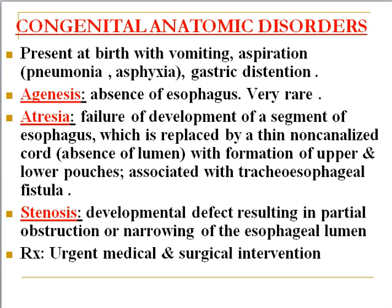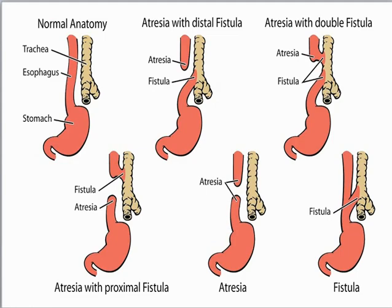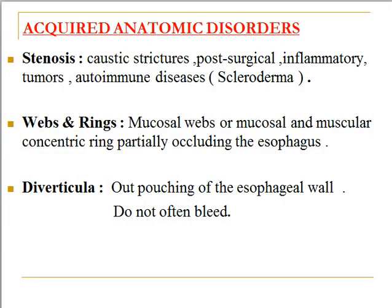The third congenital disorder is stenosis — a developmental defect resulting in partial obstruction or narrowing of the esophageal lumen without complete absence of the lumen. Both atresia and stenosis require urgent medical and surgical intervention. Acquired stenosis may be caused by caustic strictures, surgical scarring, inflammatory processes, tumors, or autoimmune diseases such as systemic sclerosis (scleroderma), all of which result in narrowing of the esophageal lumen.